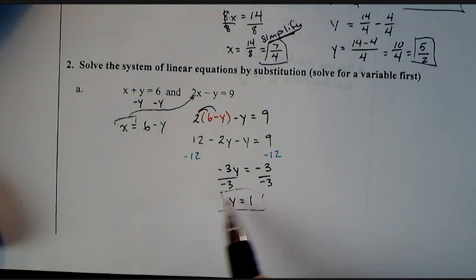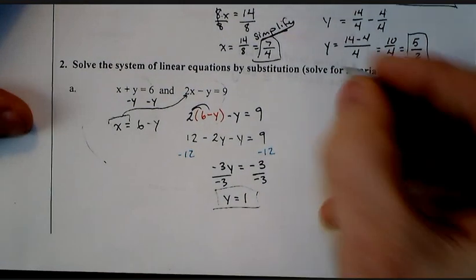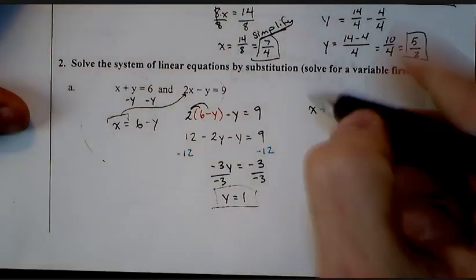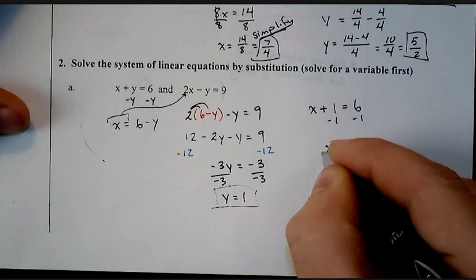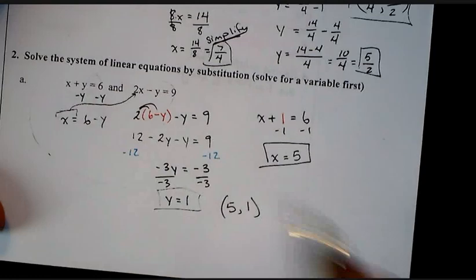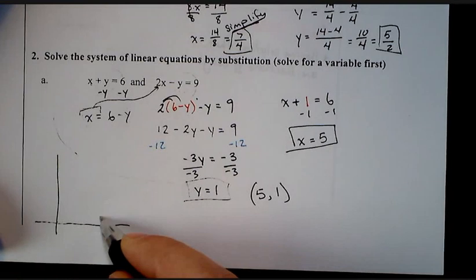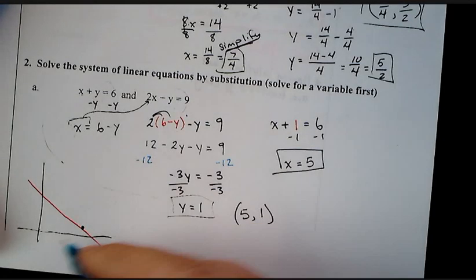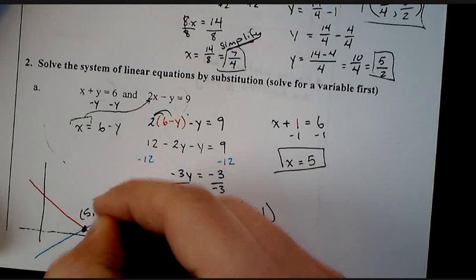Now that we have y equals positive 1, plug this back into either one of your equations. I'm going to do the first one because it looks a bit easier. And we get that x plus 1 equals 6. Solve for x. Minus 1, minus 1. We get that x equals positive 5. So, your solution is 5, 1. Again, graphically, if we were to graph these two lines, put them into slope-intercept form and graph them. 5, 1. That's right there. I'm just eyeballing it. We would have one line that comes in like this. And our second line might come in like this. And they would hit each other at this point. 5, 1. Point of intersection.